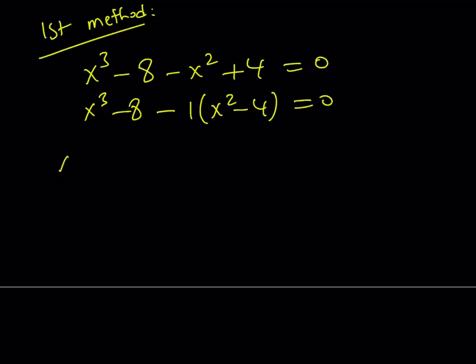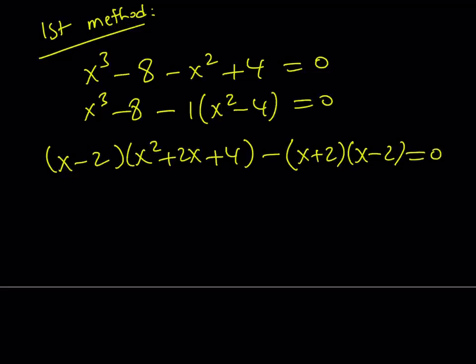a³ - b³ can be factored into (a - b)(a² + ab + b²). And then this is difference of 2 squares so I can write it as (x + 2)(x - 2). And the whole thing is equal to 0. Now notice that x - 2 is a common factor so I can take it out.